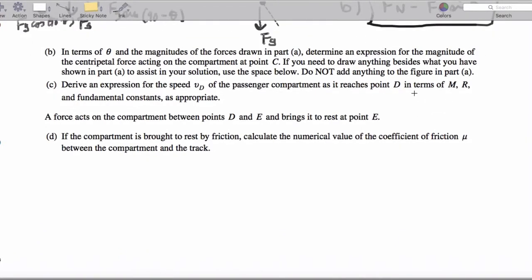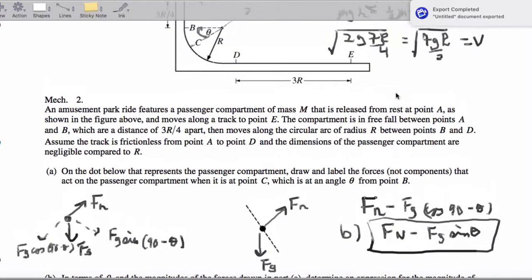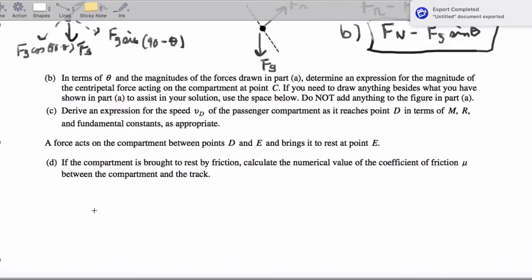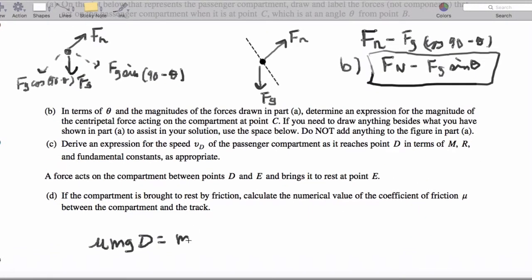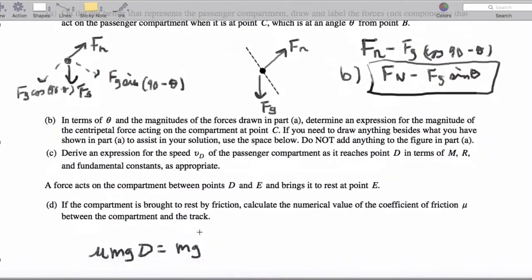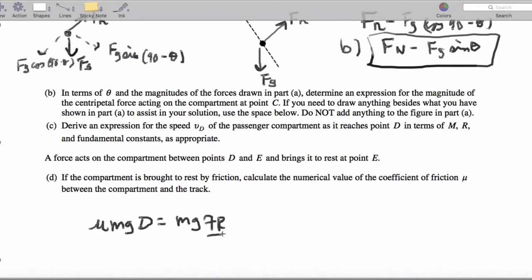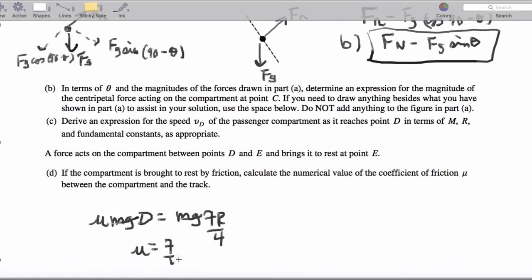Next, it says if the compartment is brought to rest by friction, we want the numerical value of the coefficient of friction mu between the compartment and the track. So, I know that mu Mgd equals Mg times 7r over 4. Mg cancels and that gives us mu is equal to 7 fourths R divided by D.